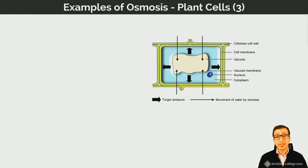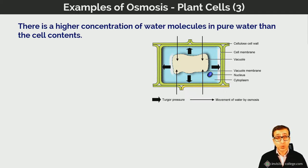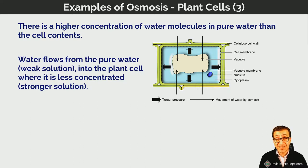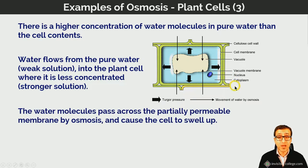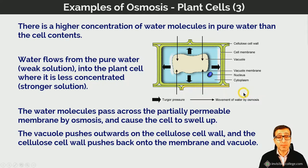The full explanation is that there is a higher concentration of water molecules in the pure water outside the cell than in the cell contents. Water moves from the pure water into the plant cell where water molecules are less concentrated — the cytoplasm and cell sap in the vacuole are more concentrated solutions with fewer water molecules per unit volume. The net movement of water molecules into the cell swells the vacuole, which pushes outwards on the cellulose cell wall; the cell wall pushes back, and in this state the cell is said to be turgid.